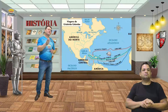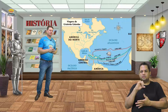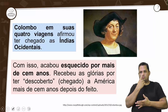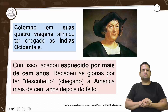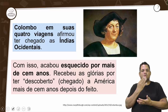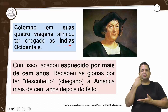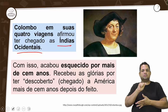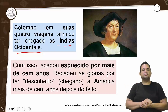Quem foi Cristóvão Colombo? Em suas quatro viagens, ele afirmou ter chegado às Índias Ocidentais. O que ele queria fazer era a circunnavegação: achava que saindo da Espanha e atravessando o oceano, chegaria ao mesmo ponto — às Índias — provando que a Terra era redonda.